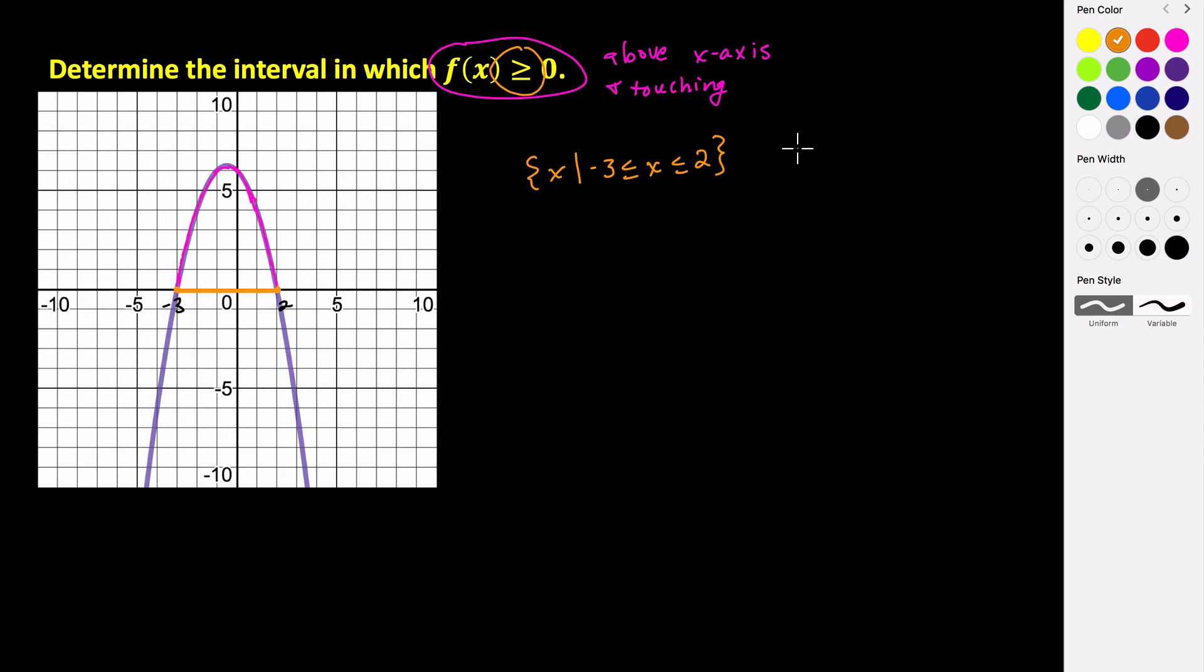If we were writing it in interval notation, it would be from negative 3 to 2. And to denote that the endpoints are included, we use the brackets. So from negative 3 to 2.